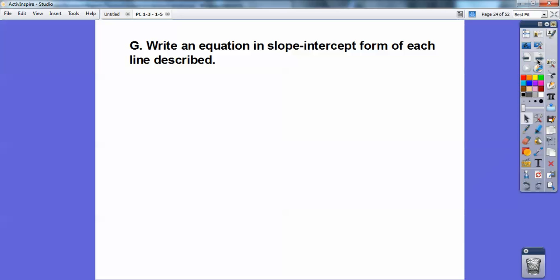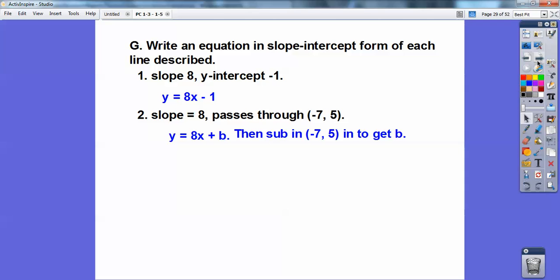Write an equation in slope-intercept form of each line. This one has slope 8, y-intercept negative 1. Remember y = mx + b. Boom! Slope 8 and it passes through that point. Now I know that the slope is 8: y = 8x + b. Then substitute that point in to get b. When I substitute in negative 7 for x and 5 for y, I get b to be 61. So there's my answer: y = 8x + 61.